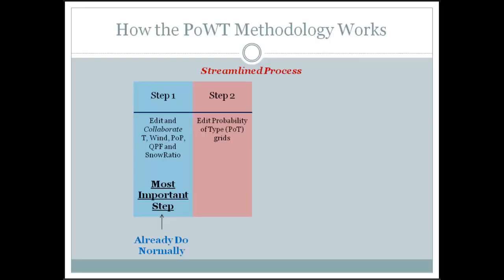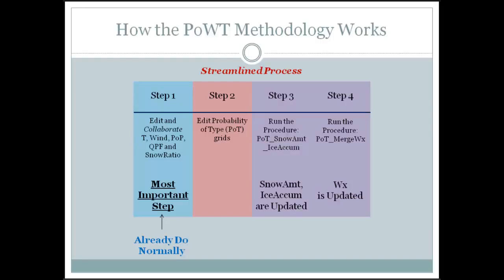Something new that the methodology adds in is the probability of type grids, which I'll talk about more later. Then we get down to two procedures. In the snow amount and ice accumulation step, you'll be running that during the fall-winter season, maybe spring as well. The last step is running merge weather to update your weather grids. Snow amount, ice accumulation, and weather are all going to be derived grids — they update for you. So the only thing new is step two: the probability type grids.